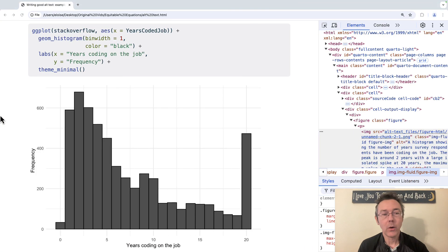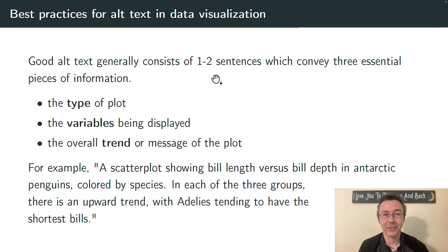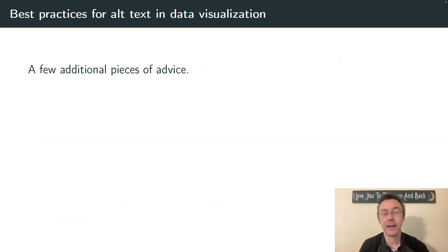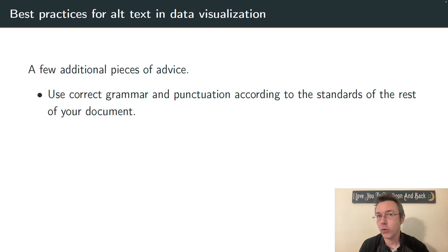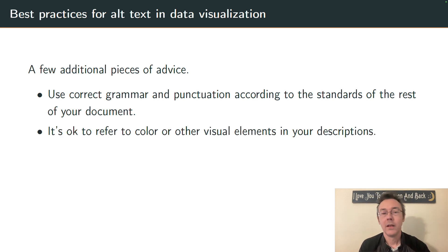Before we wrap up this video, I want to mention just a few other best practices to consider when adding alt text to your files. First of all, you should use correct grammar and punctuation according to the standards of the rest of your document. So in general, you end sentences with a period, stuff like that. Secondly, I think this is important to say out loud: it's okay to refer to color or other visual elements in your description. People that don't have sight still are aware that there's a thing called color in the world and that it's used to distinguish groups in data visualization.